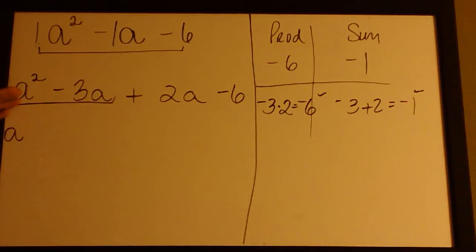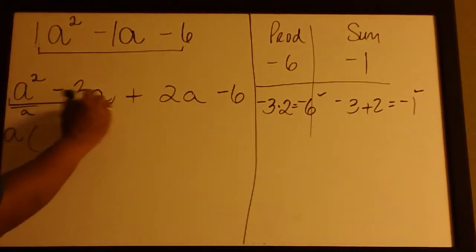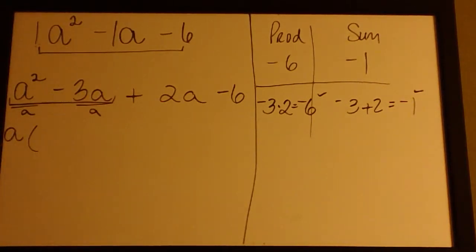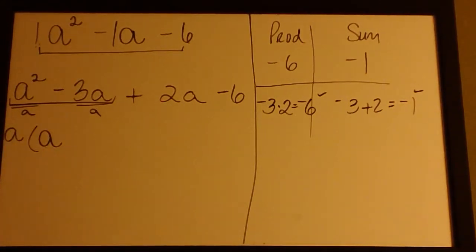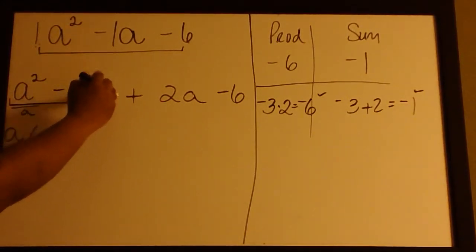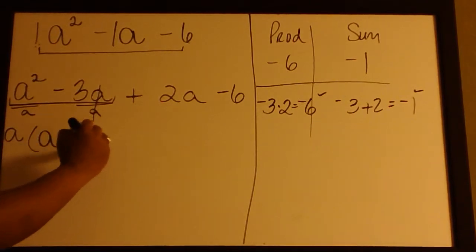To determine what goes inside the parentheses, I'll divide by the GCF a that I took out. a² divided by a is a, these a's cancel and I'm left with -3.